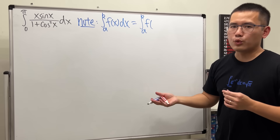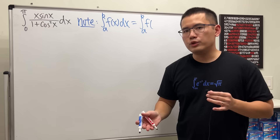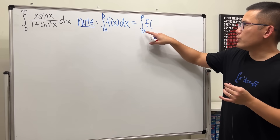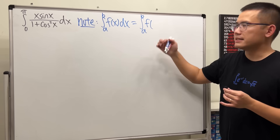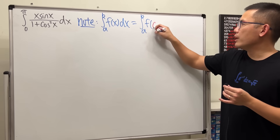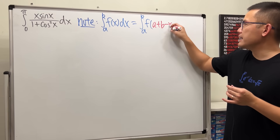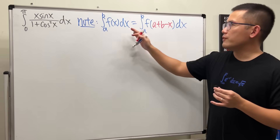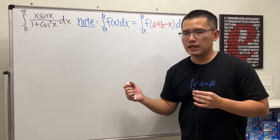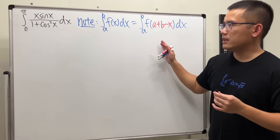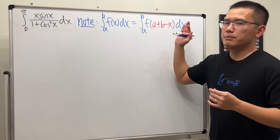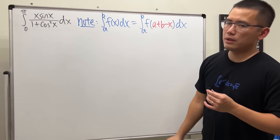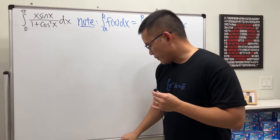It's kind of like traveling backwards — if you've done parametric equations you know what I mean. Just replace x with a + b − x. I've done the proof of this before; you can check out the other video linked in the description. Let's use this property to solve our integral.